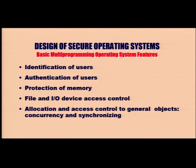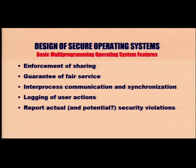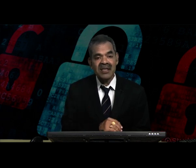Authentication of users involves passwords, hardware keys, and biometrics. Protection of memory: memory cannot be allocated to whichever application program is asking; there are access permissions and restrictions. File and I/O device access control, allocation of access control to general objects, enforcement of sharing — there must be sharing rules, and sharing violations should be spotted by the system. All these indicate that the functionalities of the operating system have become more and more intricate in design and policy formation. We need to guarantee fair service and simply cannot block resources. Interprocess communication and synchronization, logging of user actions — no system is perfect; we have made several compromises and adjustments.